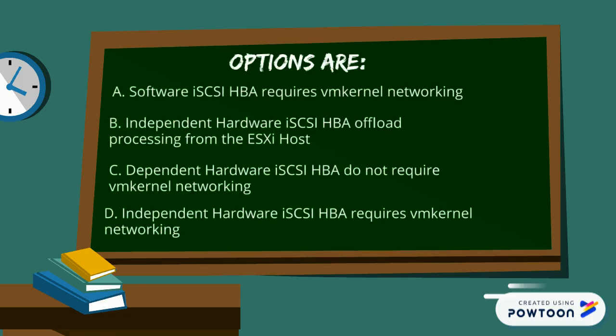Let's review our options again. A: Software iSCSI-HBA requires VM Kernel Networking — that's true. B: Independent Hardware iSCSI-HBA offloads processing from the ESXi host — that is also true. C: Dependent Hardware iSCSI does not require VM Kernel Networking — that is not true; it requires VM Kernel Networking. D: Independent Hardware iSCSI-HBA requires VM Kernel Networking — that is the wrong answer.